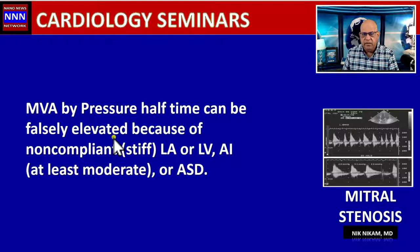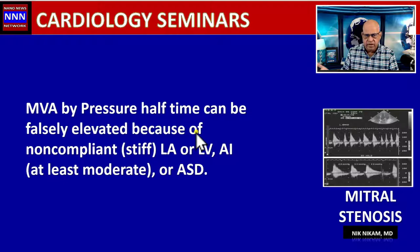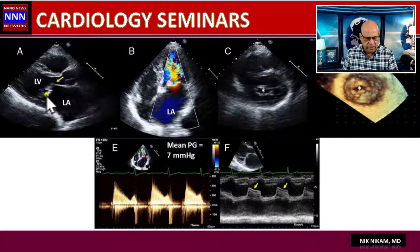Mitral valve area by pressure half-time can be falsely elevated because of a non-compliant left atrium or left ventricle, if there is aortic regurgitation, or if the patient has a left-to-right shunt. Here are some examples of calcified or stenotic mitral valves with a significantly narrowed orifice.